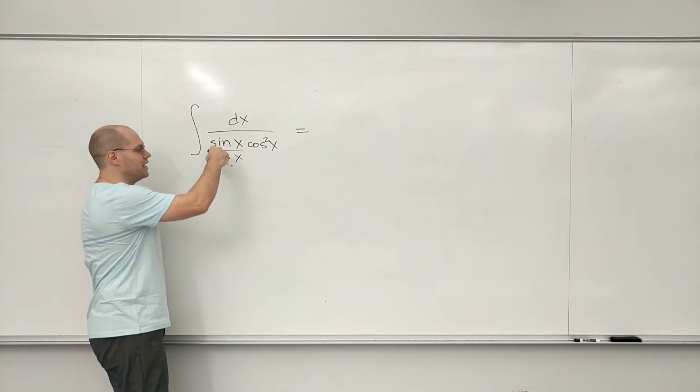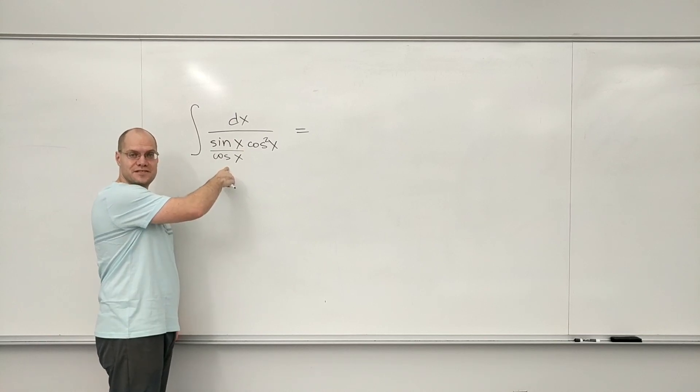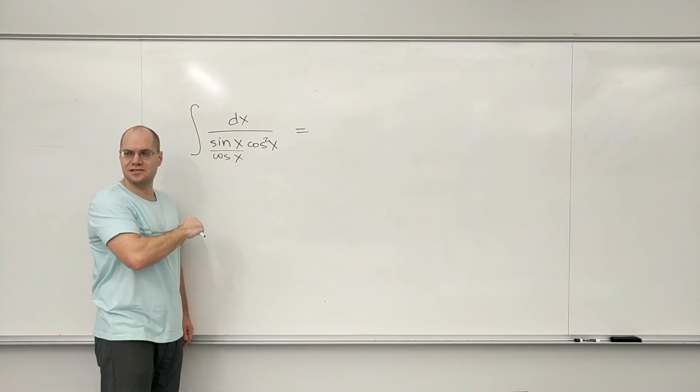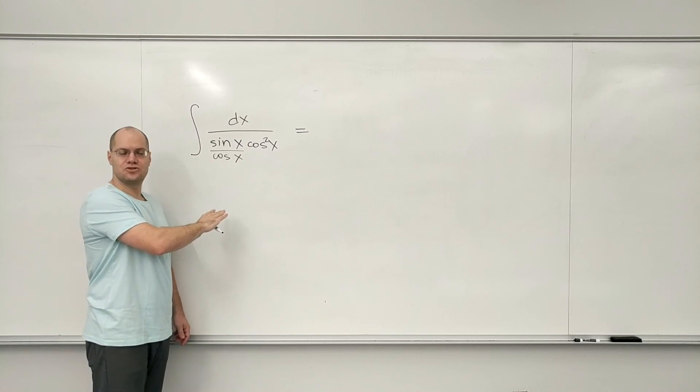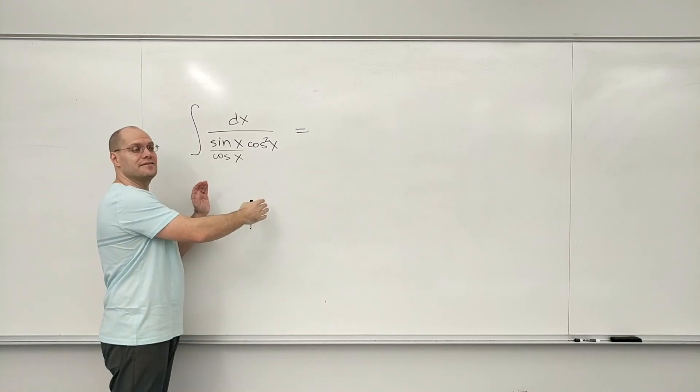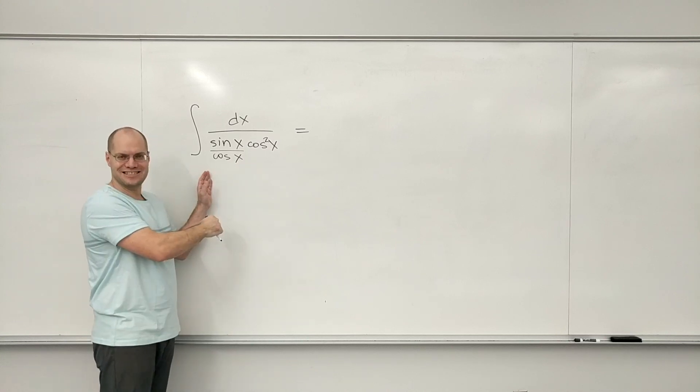Because now we have 1 over tangent, and what's the derivative of tangent? 1 over cosine squared.